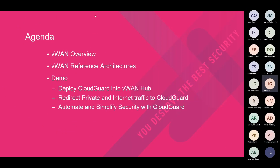My name is John, Cloud Alliance Architect from Checkpoint. With me is Nathaniel. This is our agenda for today. I'm going to first level set on the overview of Azure Virtual WAN so that we can all be on the same page for those who are not familiar. I'll spend a little time giving you a quick overview, then we'll go over some reference architectures and how to deploy CloudGuard network security inside the VWAN.